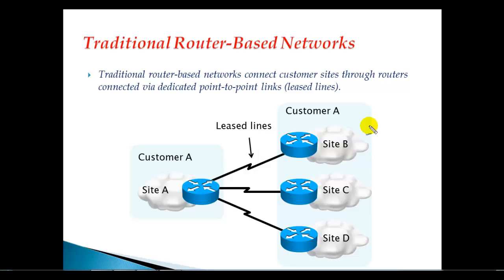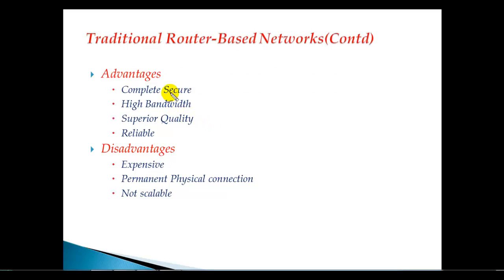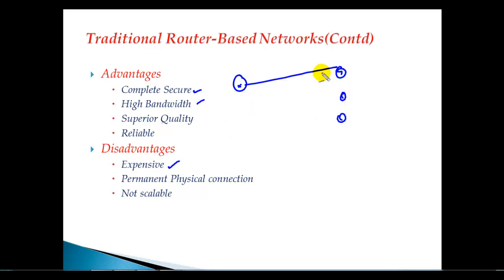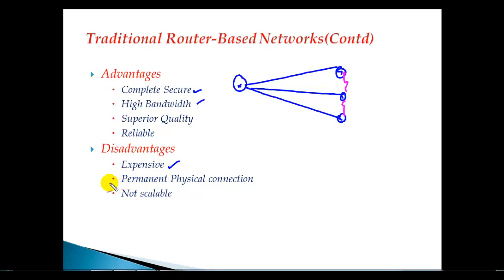It's a very good connection but there are advantages and disadvantages with leased line connections. When it comes to advantages, it's very secure, provides high bandwidth with good quality and reliability. But leased lines are very expensive. If you want to connect router A to router B, router C, and router D, you need three separate leased line connections, and connections between B to C and C to D each need their own separate leased line. So the more sites you want to connect, the more dedicated WAN connections you need, and it is not scalable.